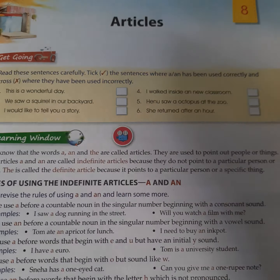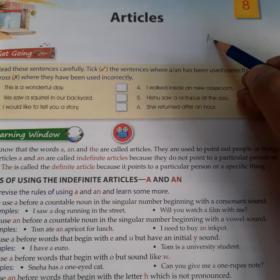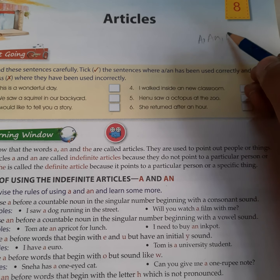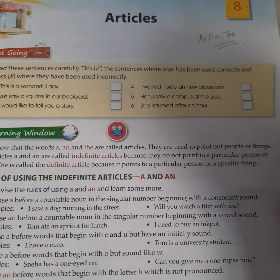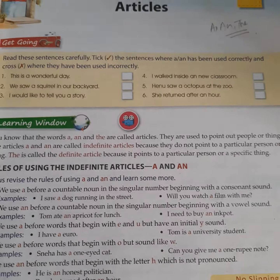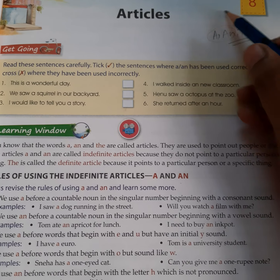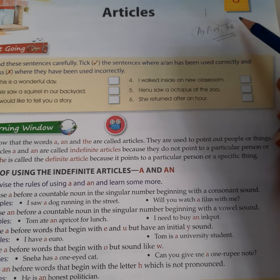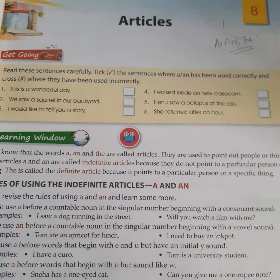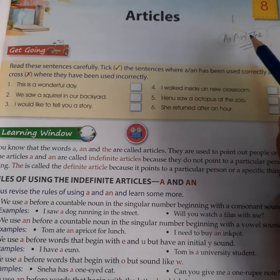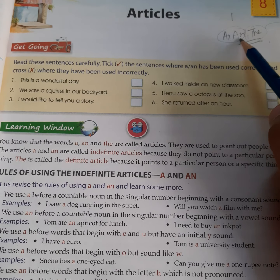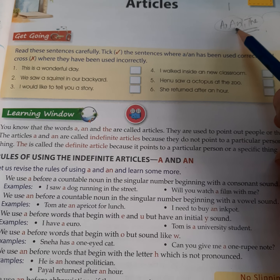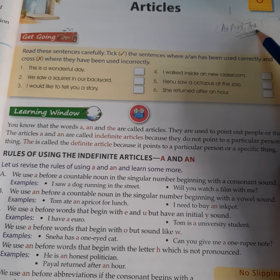Basically there are three articles: A, An, and The. A and An mean one — a single something. The is used somewhere else. First of all we are going to learn about A and An, about their uses, how we can use them. And then we will turn to The.